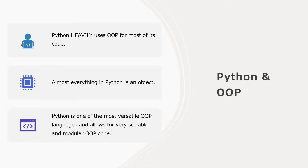First, we need to talk about Python and OOP, and why OOP is important in Python. Python heavily uses OOP for most of its code. Pretty much everything in Python is an object — everything you see is an object. Whenever you see a string, that's an object. A list, that's an object. A dictionary, that's an object. Almost everything in Python is an object.